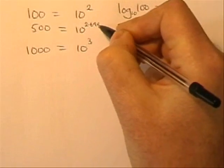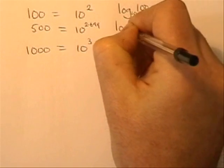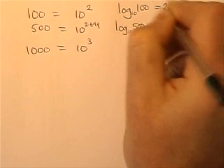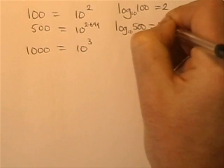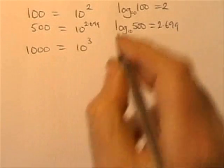So 2.699 is the power you've got to use with 10 to get 500. So another way of putting it, log to base 10 of 500. What's the power? It's 2.699. And 3 is the power you use with 10 to get 1000.